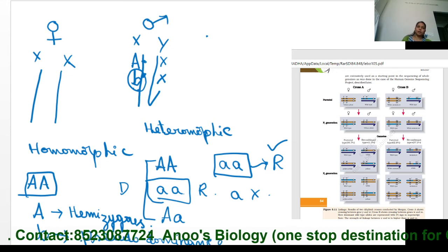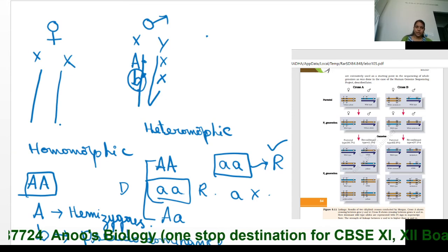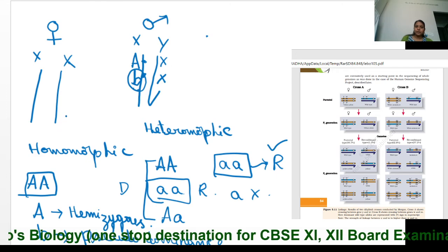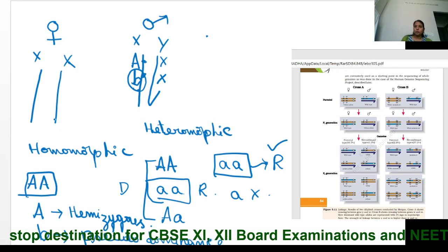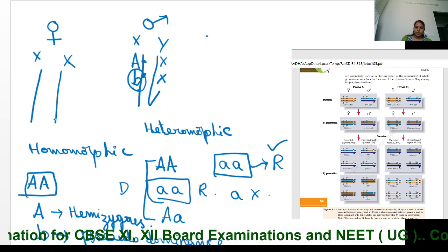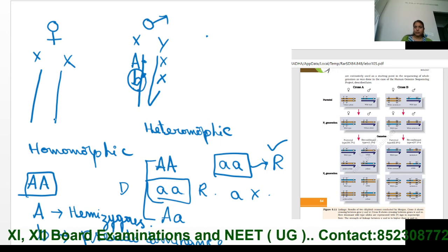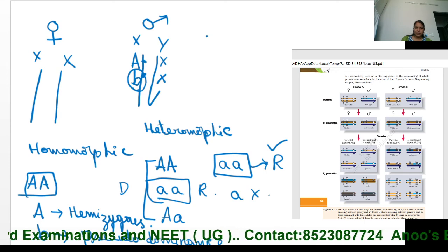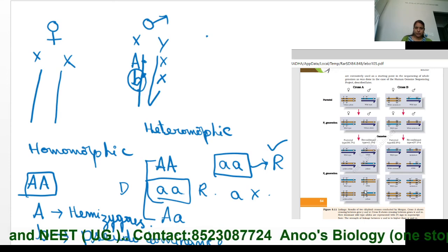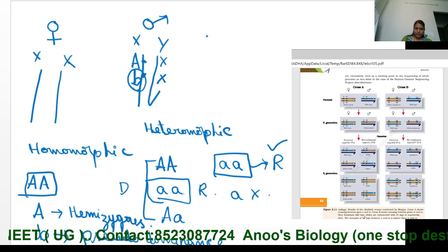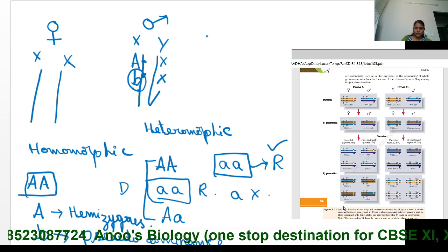Now let's start with Morgan's experiments conducted in Drosophila melanogaster to explain linkage and the chromosomal theory of inheritance. I will be explaining the experiments and the diagrams given in NCRT in the next video. Please do wait for the next video. Thank you students, hope you understood this concept.